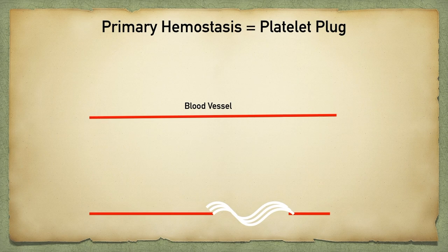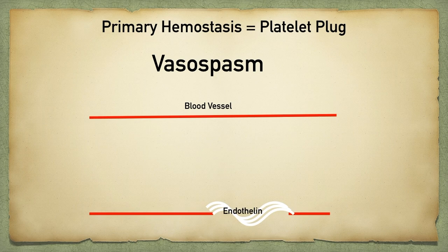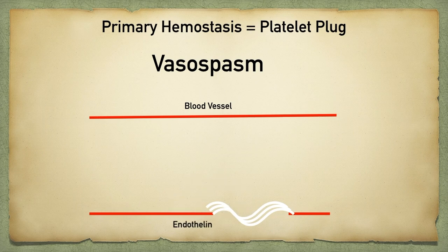The first thing that actually occurs before the formation of a primary platelet plug is what's called vasospasm. The blood vessels will naturally constrict and contract to limit some of that bleeding. The damaged endothelial cells release a chemical peptide called endothelin. Endothelin is a potent vasoconstrictor — it binds to the vascular smooth muscle and leads to contraction, which causes vasoconstriction and helps reduce some of that bleeding.